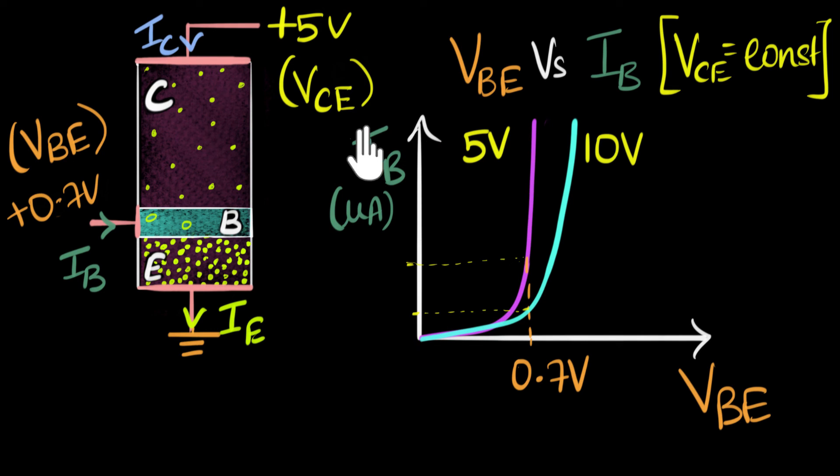Now the major takeaway that you can get from this input characteristic graph is that if the voltage of the base, the base emitter voltage, if that voltage is somewhere over here, let's say about 0.2 volt or something like that, notice that the input current is pretty much zero. So IB is pretty much zero, which means hardly any electrons are getting injected, and as a result, hardly any electrons will get collected, which means IC would also be zero.